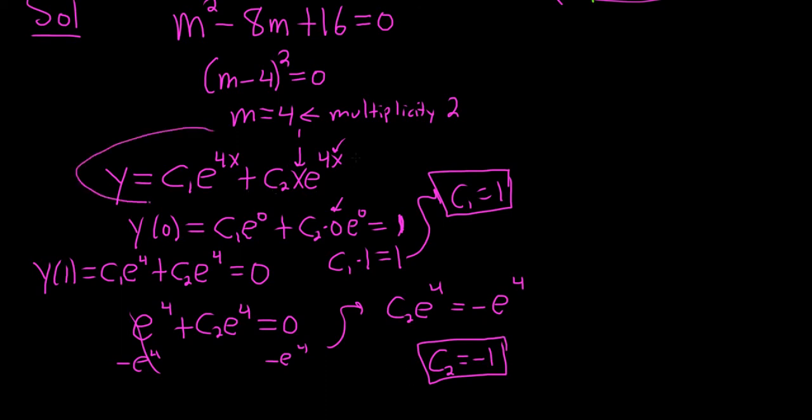All right. Now we just go back here and fill in the answer. So the final answer to this problem will be y equals, well, c1 is 1. So we just get e to the 4x. And c2 is minus 1. So it will be minus x e to the 4x. What a nice answer.